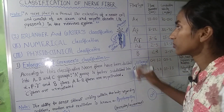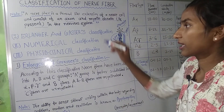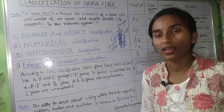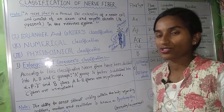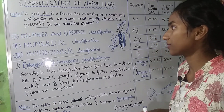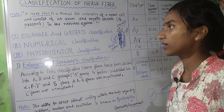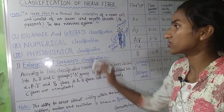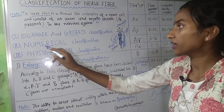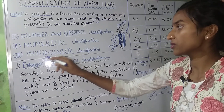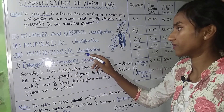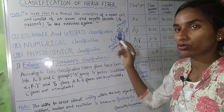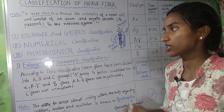Now we are going to go to our main topic: classification of nerve fiber. We are learning mainly three classifications — Erlanger and Gasser classification, numerical classification, and physiological classification. These classifications were given by scientists.